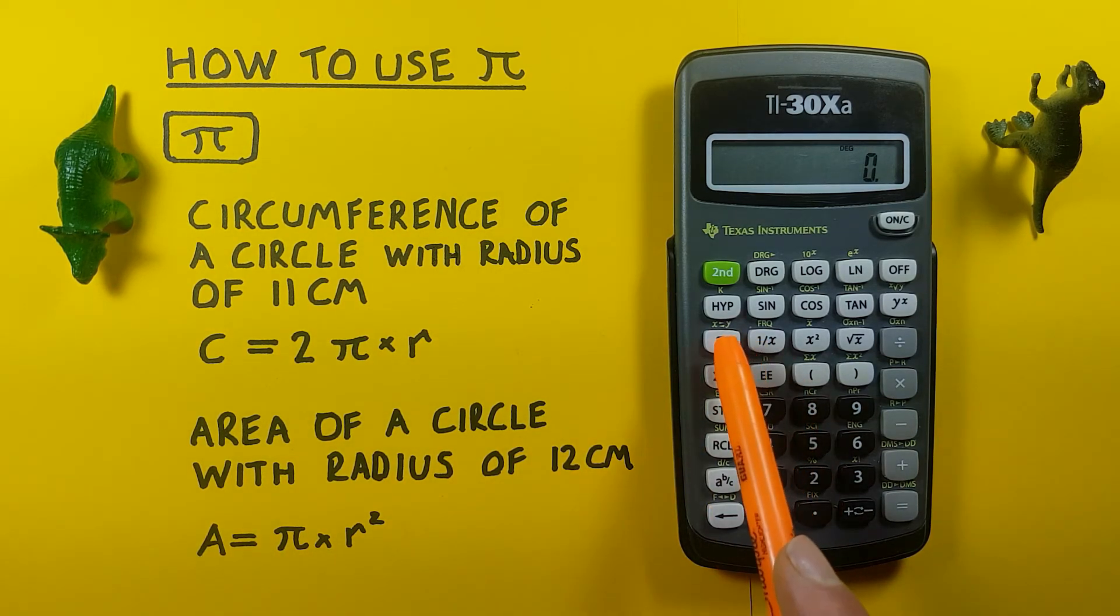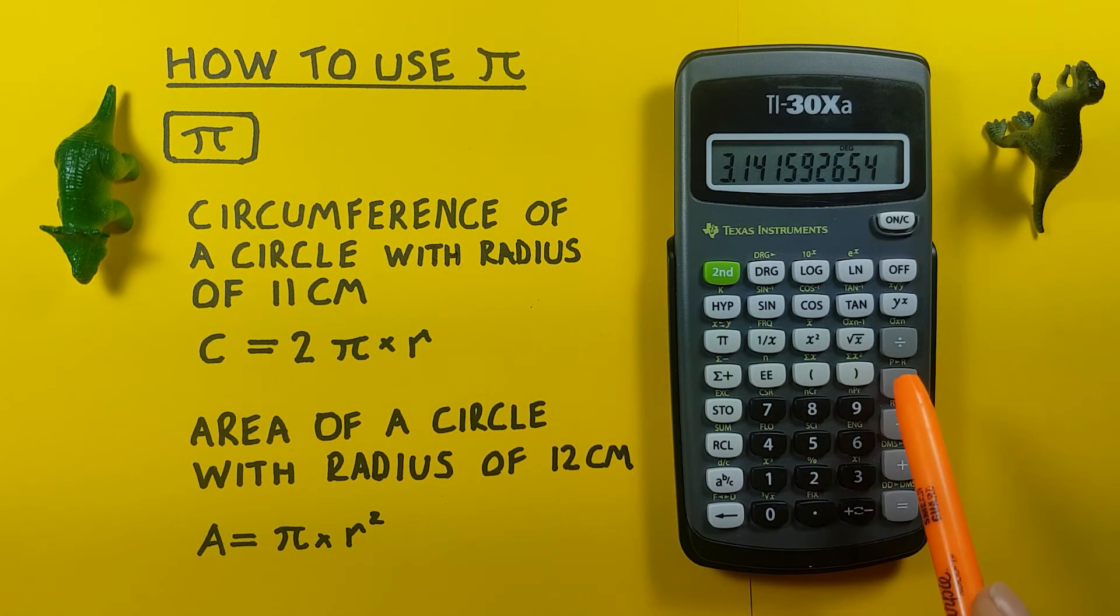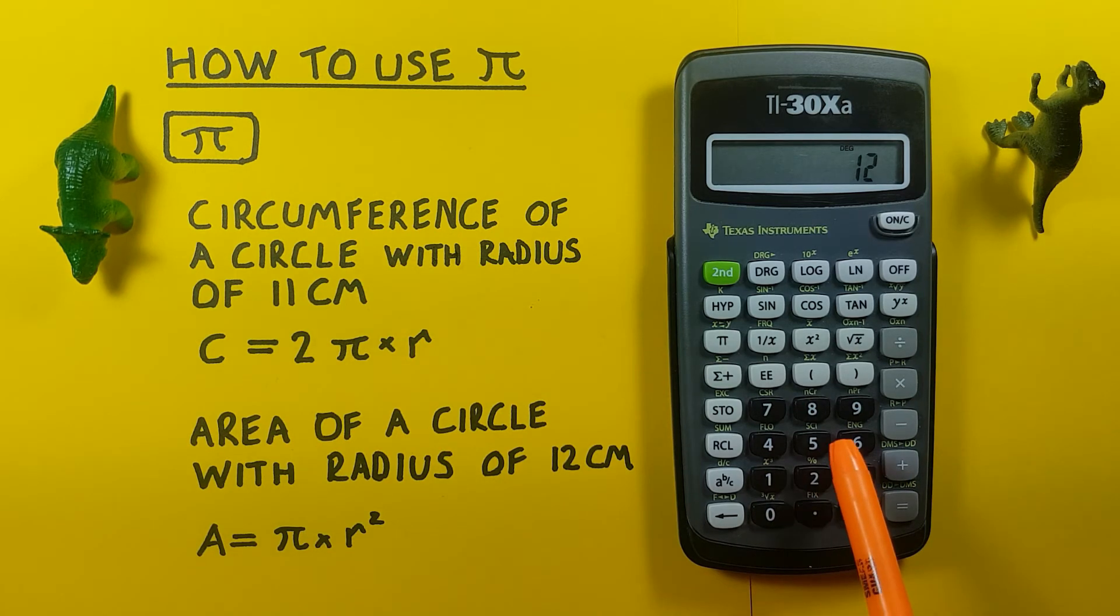So we can do this by pressing the PI key, and then times 12. Then we want to square that with our square key here.